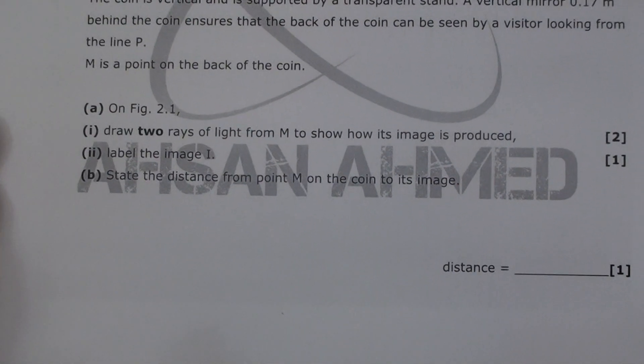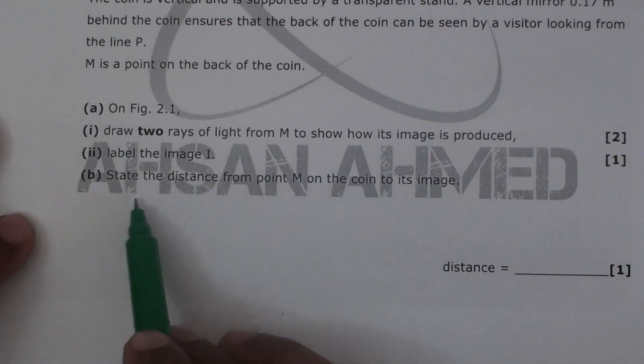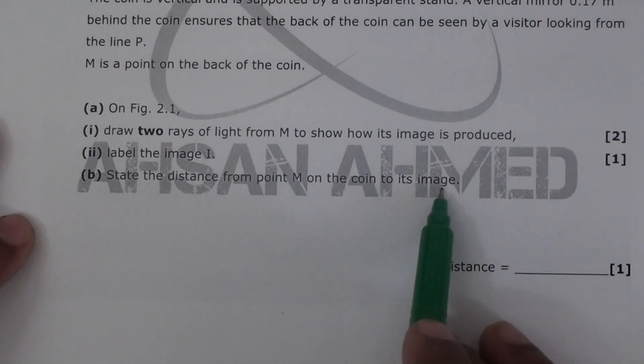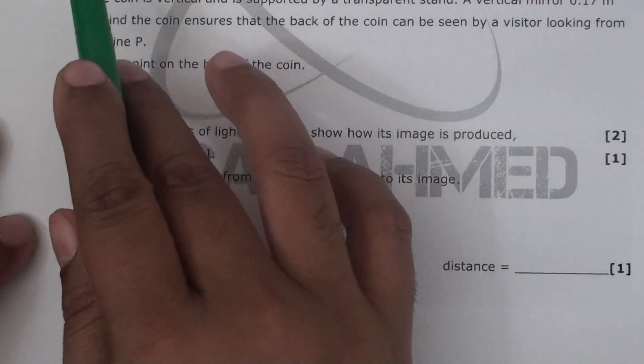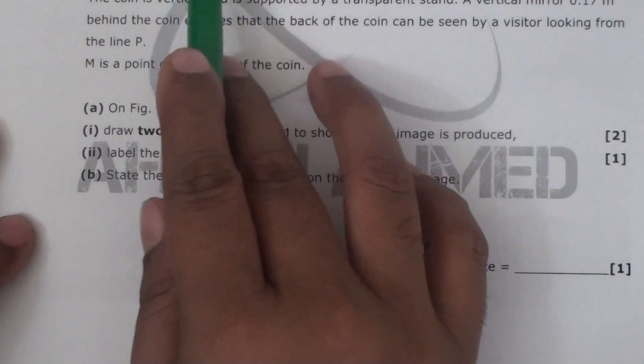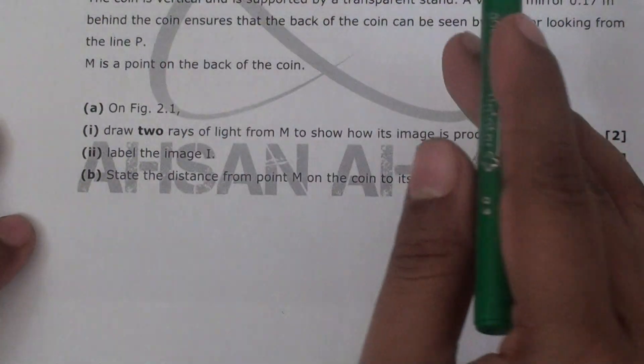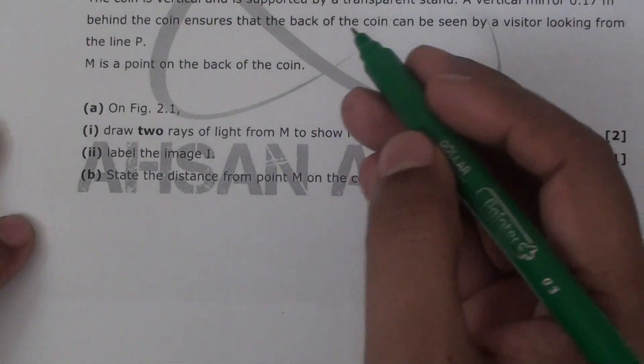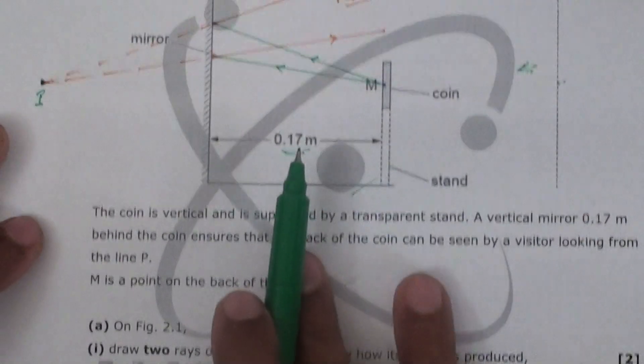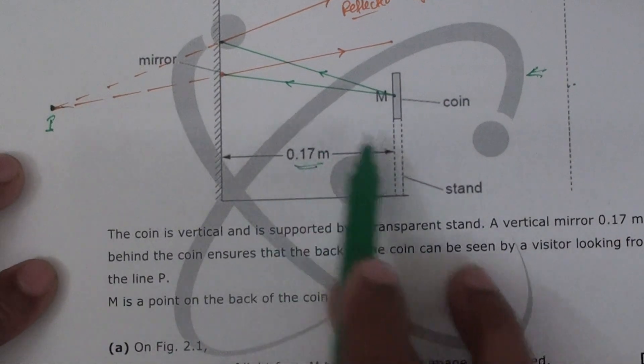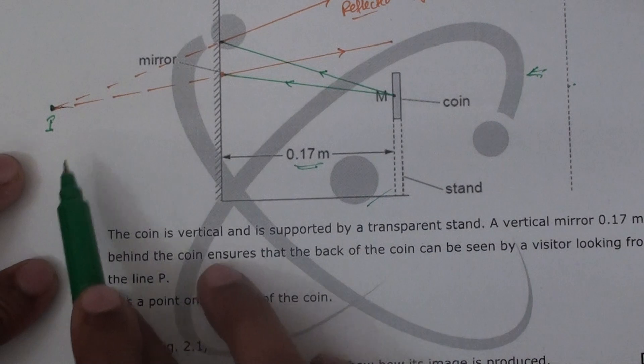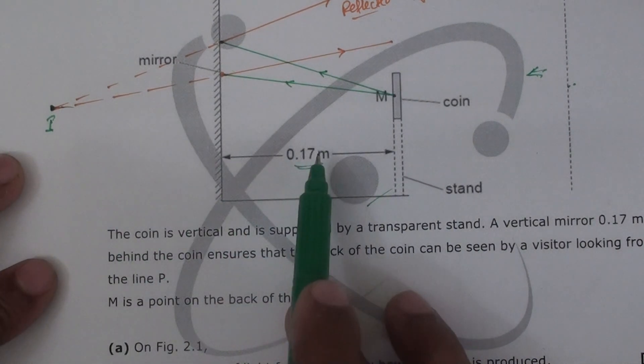And the next is state the distance from point M on the coin to its image. Now we have to add 0.17 plus 0.17, because that's how it should be in reality.